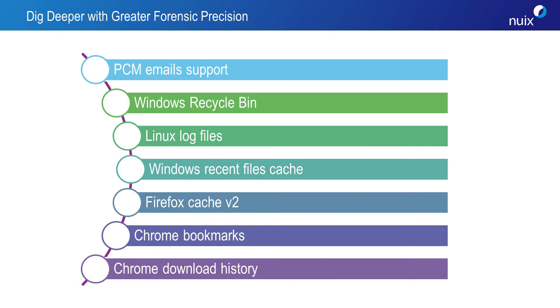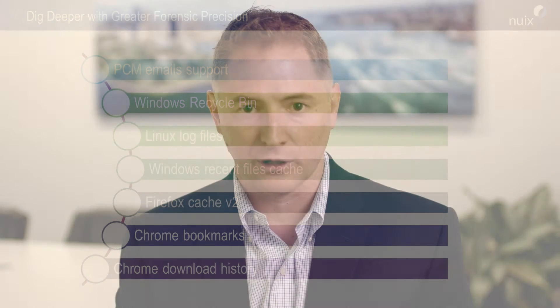NUX version 7 will allow you to dig deeper with greater forensic precision. NUX has always been known for how wide we can scale and how fast we can go, but we're now able to go deeper into data we've never gone into before — looking at unstructured information, looking at forensic artifacts, being able to link registry items with shell bags and other items on the forensic file system, really to give investigators that complete picture. Great speed with tremendous forensic precision.